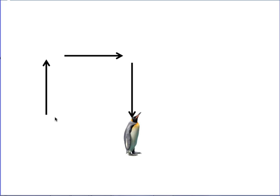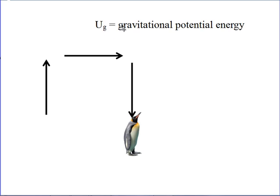If I then put the penguin down, energy comes out of the earth-penguin system. The penguin is now closer to the earth; there is less gravitational potential energy in that system. If I were a spring, then lifting the penguin up, the penguin-earth system would gain energy, but the spring would lose energy as it expands. As the penguin came down squashing the spring, what was negative work for the penguin-earth system would be positive work for the spring.